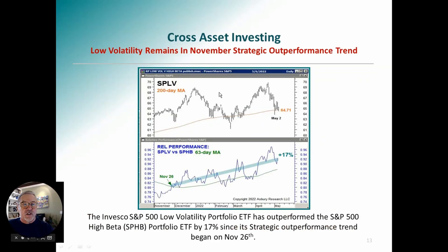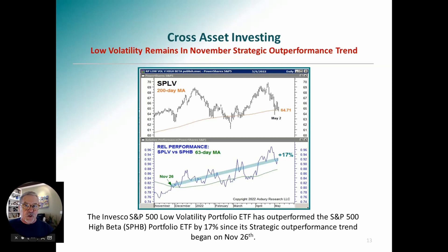Here's the low volatility versus high beta comparison. Since November 26th, it's been in a strategic trend of outperformance — SPLV, the low vol ETF, has outperformed by 17% and has outperformed the S&P 500 by 15% during the same period. For somebody who needs to stay invested — like many money managers who can't go fully to cash — this gets you into places where you're outperforming the S&P in a down market. Your clients will be very happy with that.